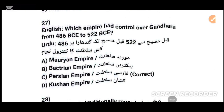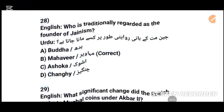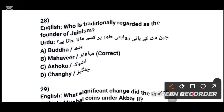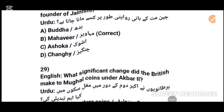MCQs number 27: Which empire had control over Kandahar from 403 BCE to 502 BCE? The answer is the Persian Empire — فارسی سلطنت. MCQs number 28: Who is traditionally regarded as the founder of Jainism? جین مت کے بانی روایتی طور پر کسے مانا جاتا ہے؟ The answer is Mahavira.